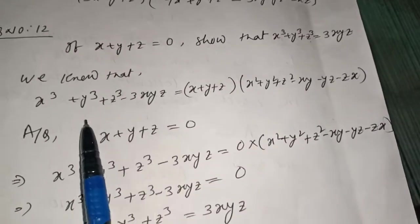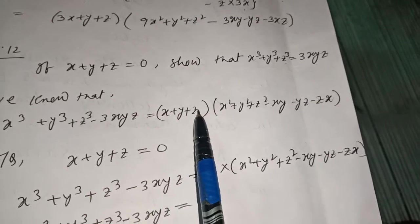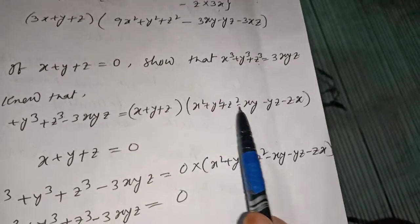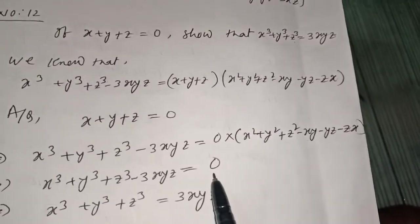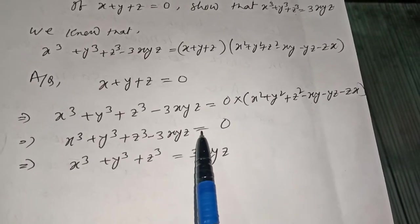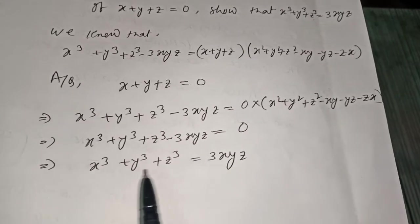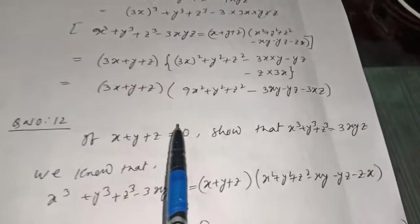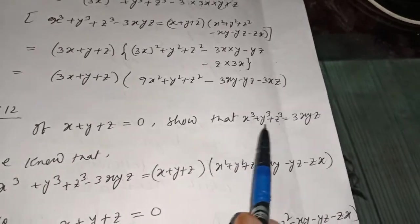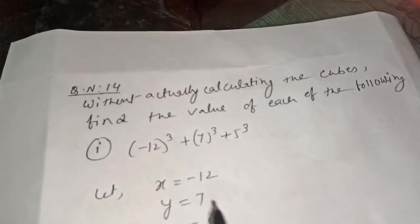Substituting: x³ + y³ + z³ - 3xyz = 0 × (x² + y² + z² - xy - yz - zx) = 0. Therefore x³ + y³ + z³ - 3xyz = 0, which means x³ + y³ + z³ = 3xyz. This is proved. Understood?